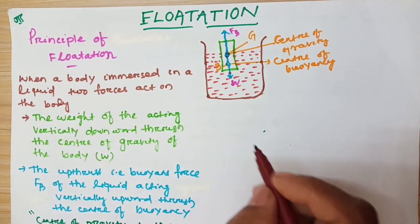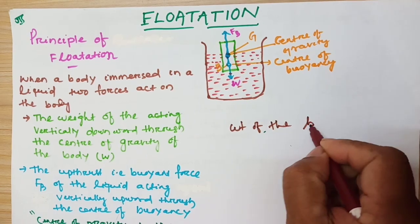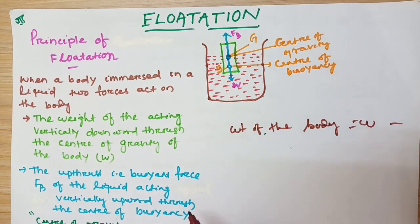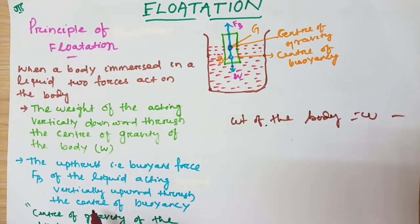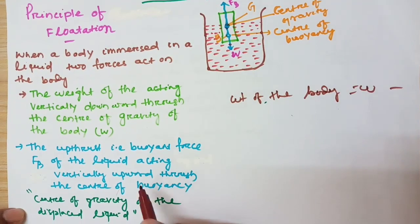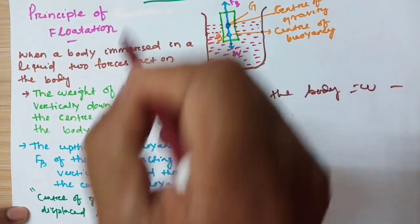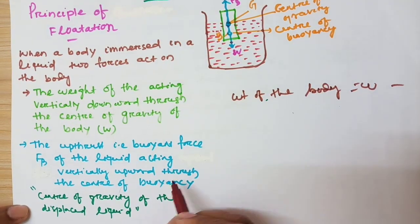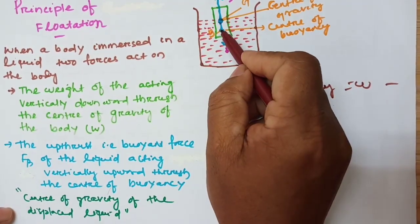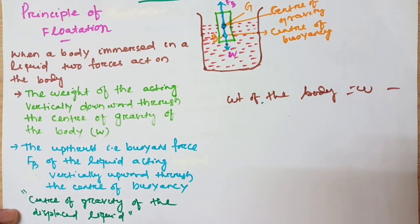The weight of the body is W. This is the entire force acting downward. Another force is the upthrust, that is called buoyant force — the buoyant force of the liquid acting vertically upward through the center of buoyancy. The center of buoyancy is the center of gravity of the displaced liquid.